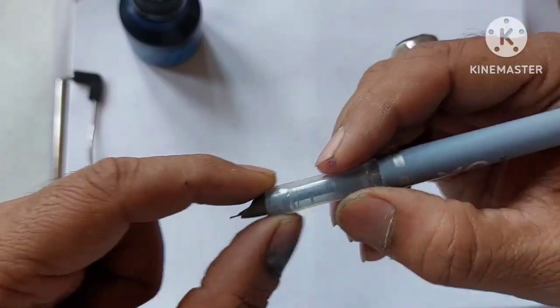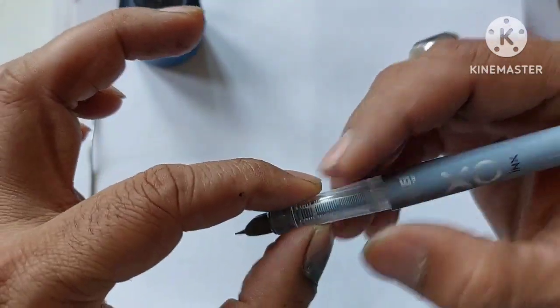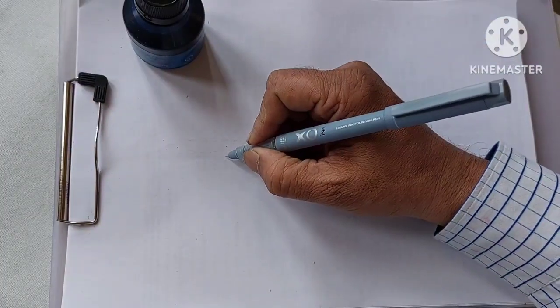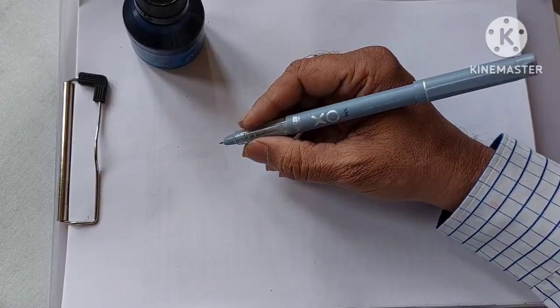And the grip section is tapering. It has this plastic part which is tapering and it gives a good hold and the plastic is also good quality. So the grip section is really good. It holds well for the hands.